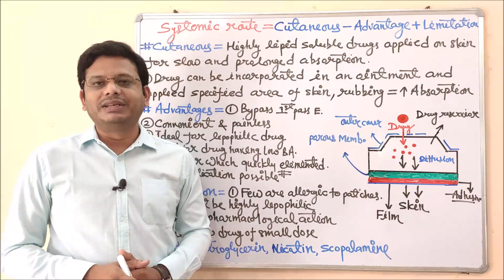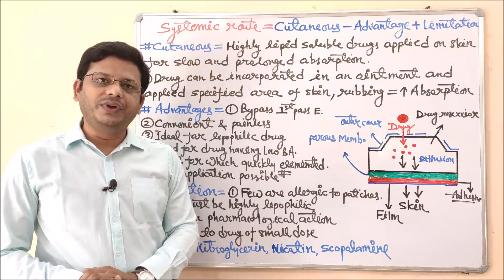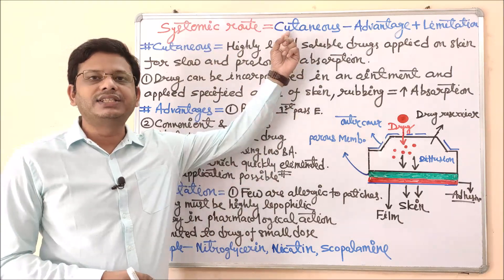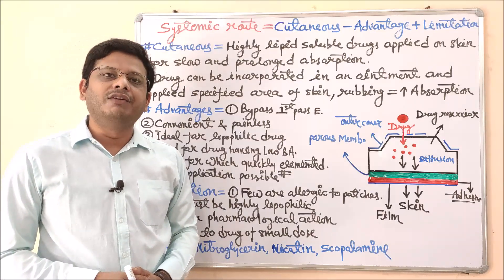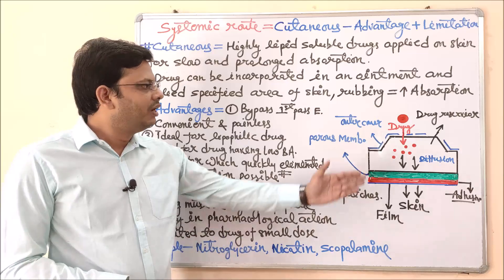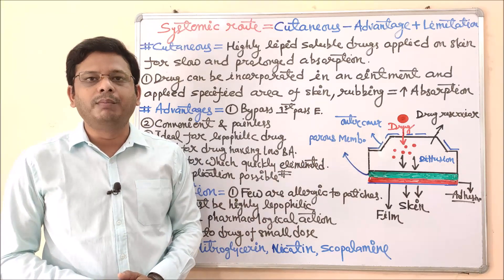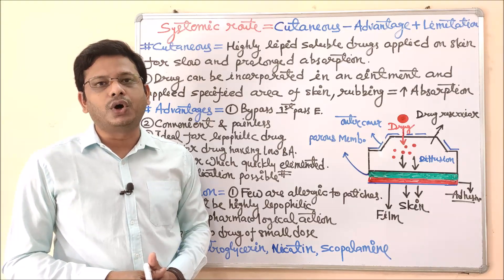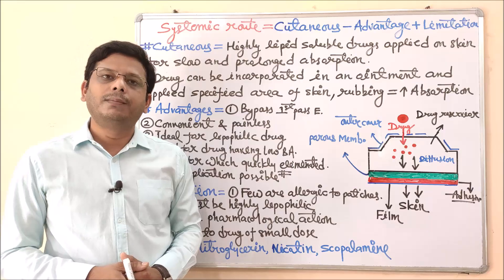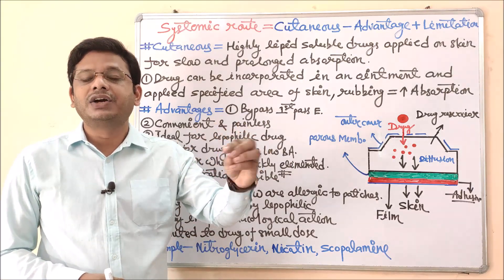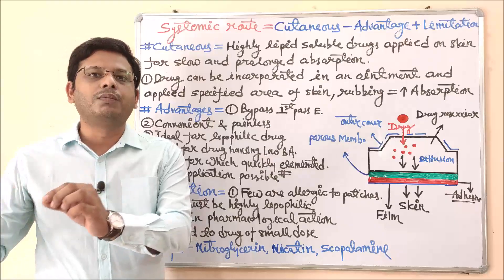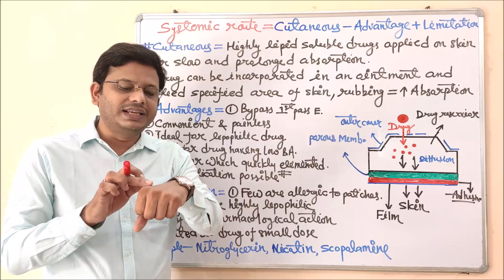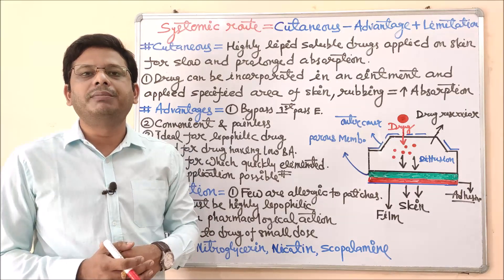Welcome to the Pharmacy Dictionary channel. In today's lecture video, we are going to discuss another route of drug administration under systemic route — that is the cutaneous route of drug administration. The meaning of cutaneous route is that we have to apply the drug over the skin so that the drug may reach the systemic circulation, meaning into the blood.